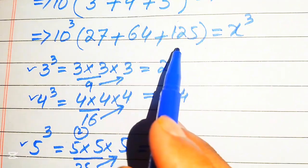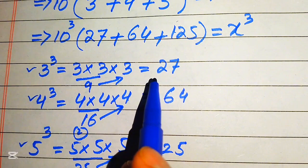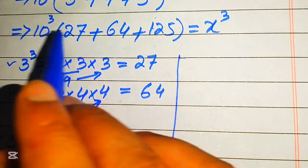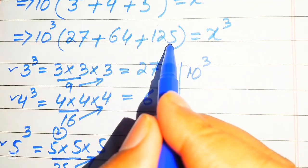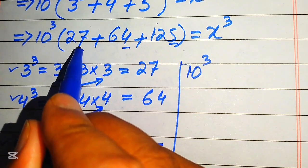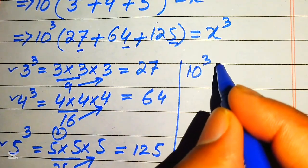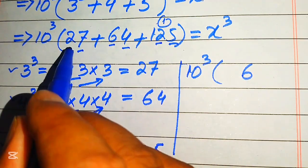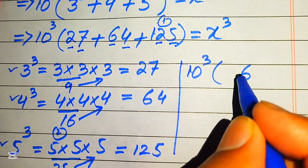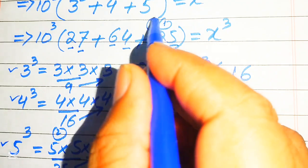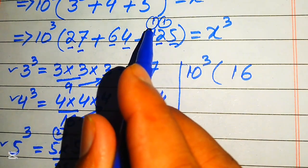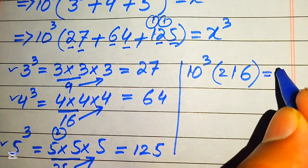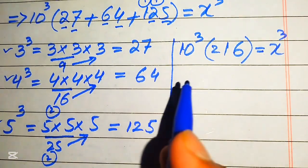In the next step we sum up all three values. Adding 27 plus 64 plus 125: 5 plus 4 plus 7 is 16, write 6 carry 1; 2 plus 6 plus 2 plus 1 is 11, write 1 carry 1; then 1 plus 1 is 2. So the sum is 216, giving us 10 cubed times 216 equals x cubed.